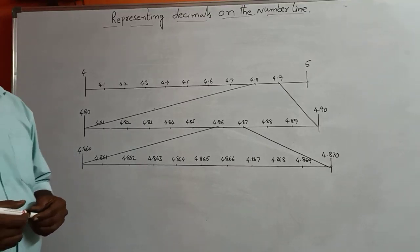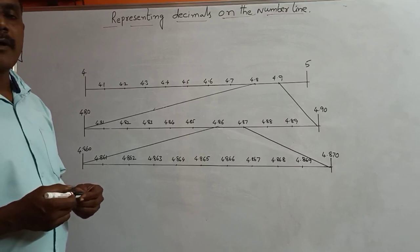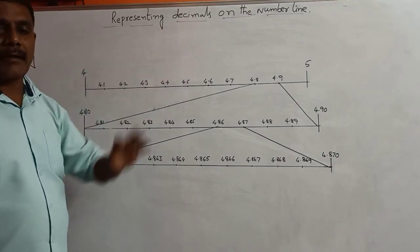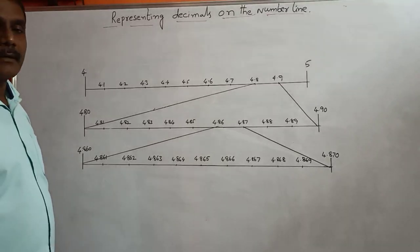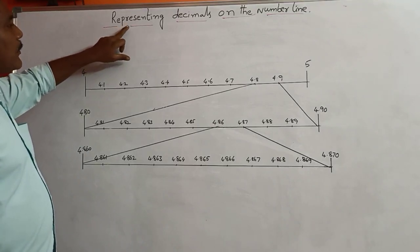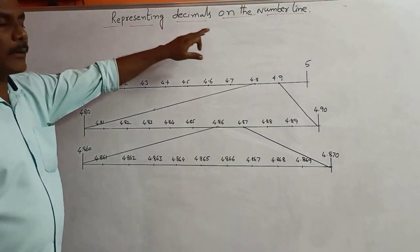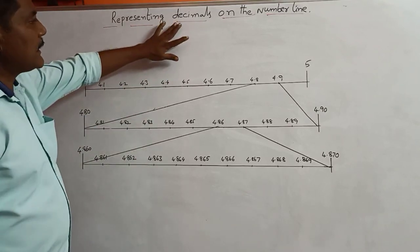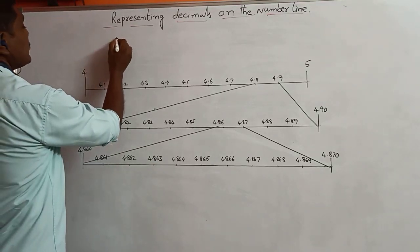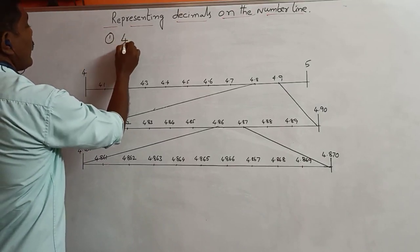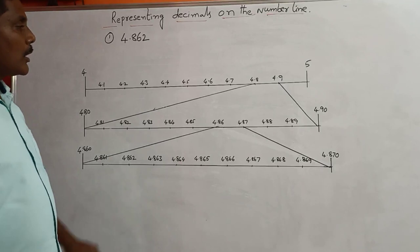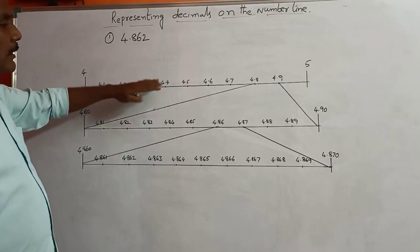Dear students, today we are going to learn about the representation of decimals on the number line. Today is our third day of class. I am going to teach you how to represent a decimal on the number line. Now I take a decimal as 4.862, and I am going to represent this decimal on the number line.